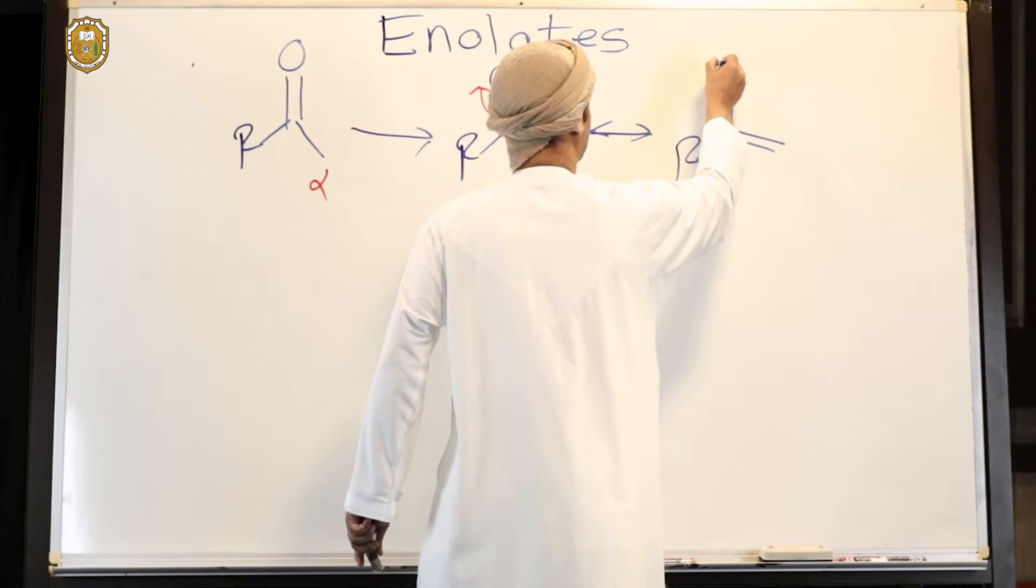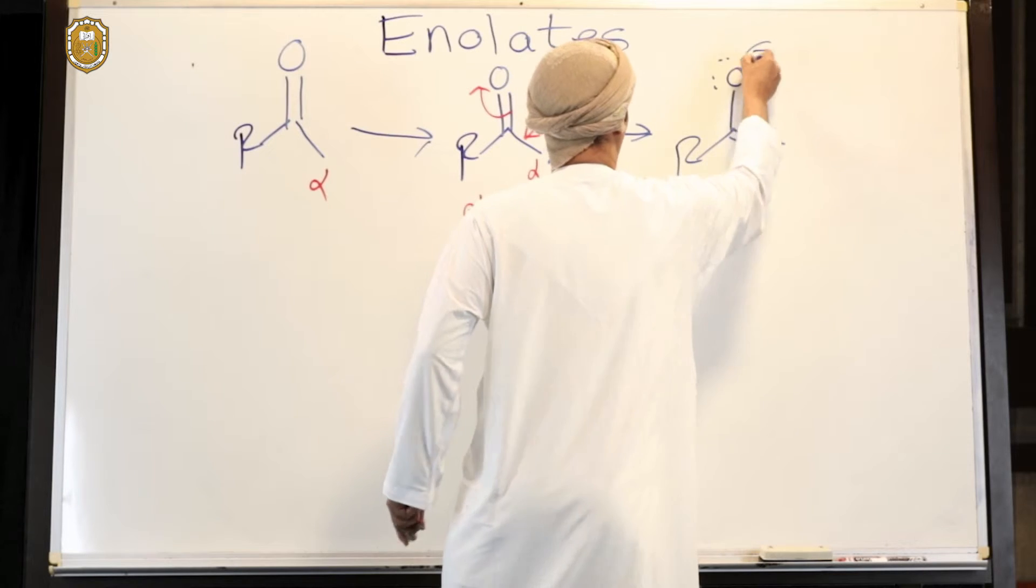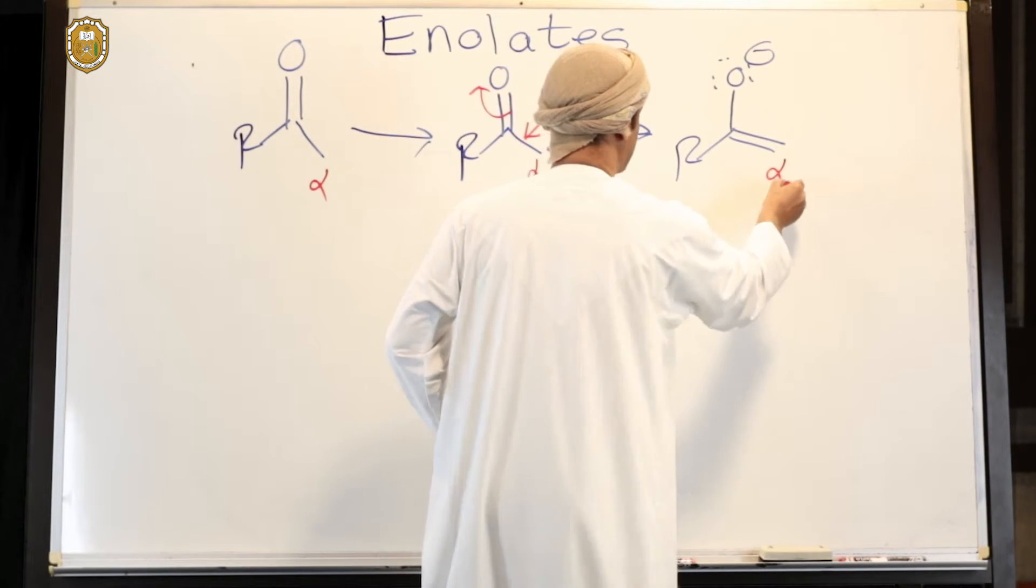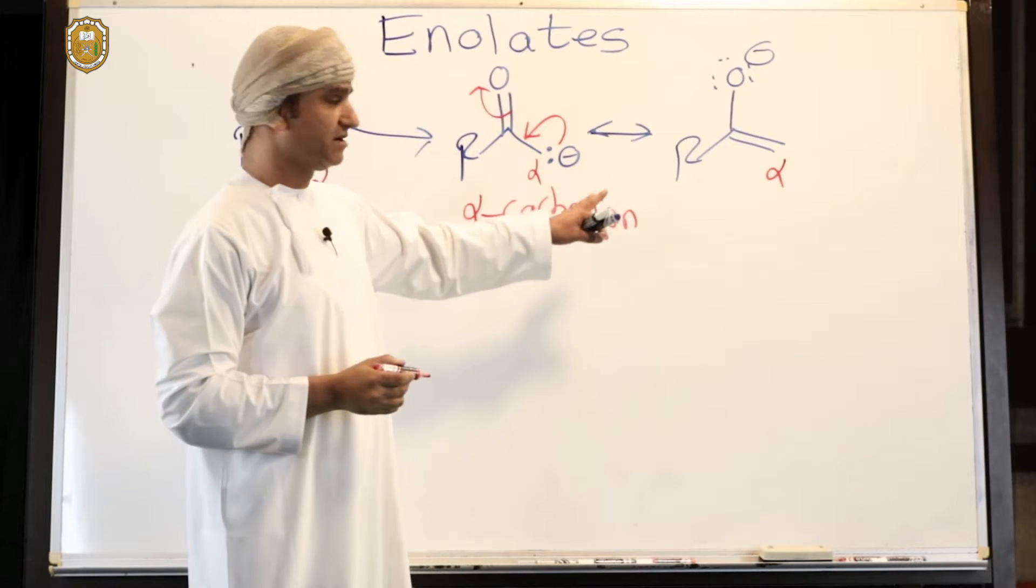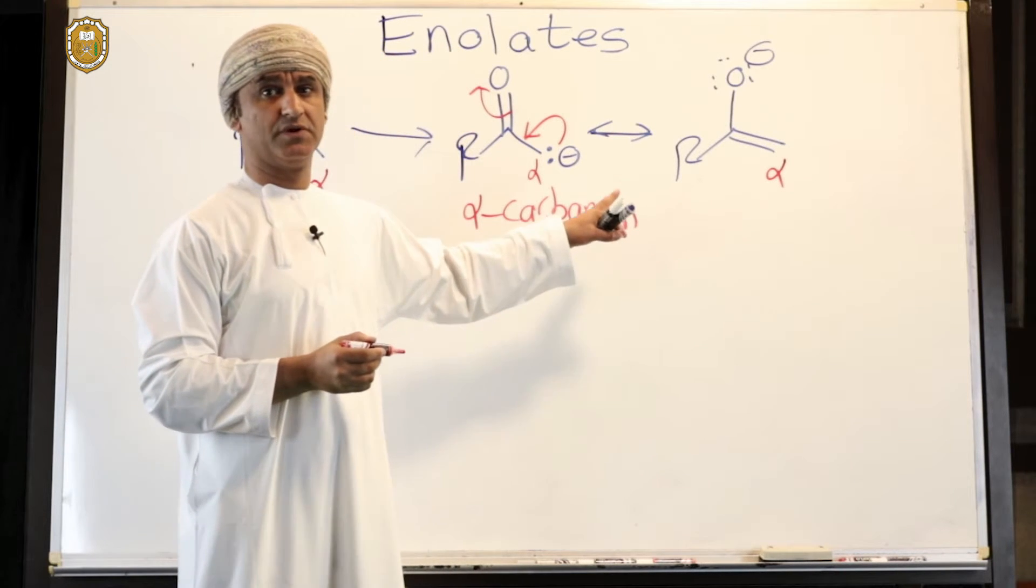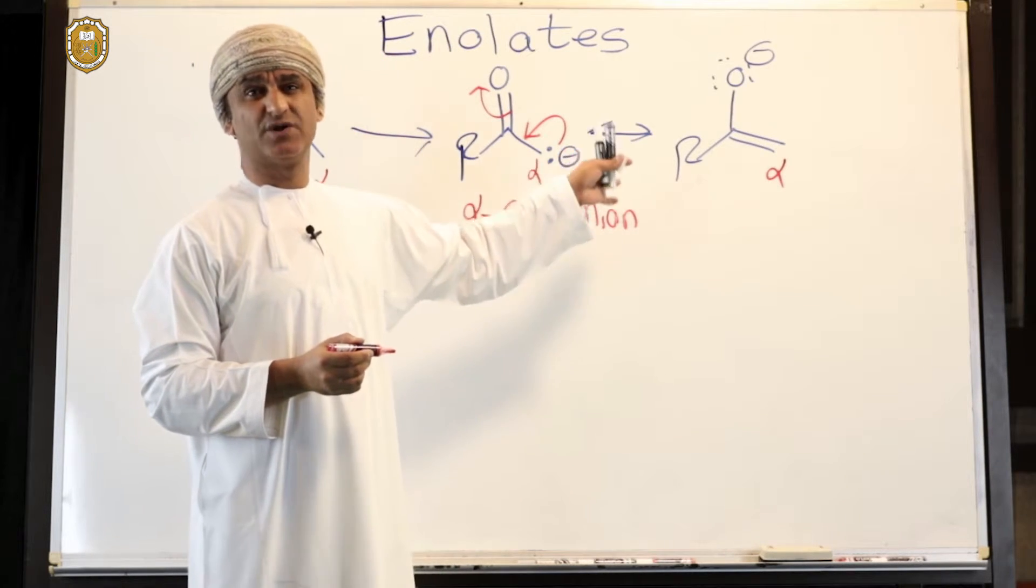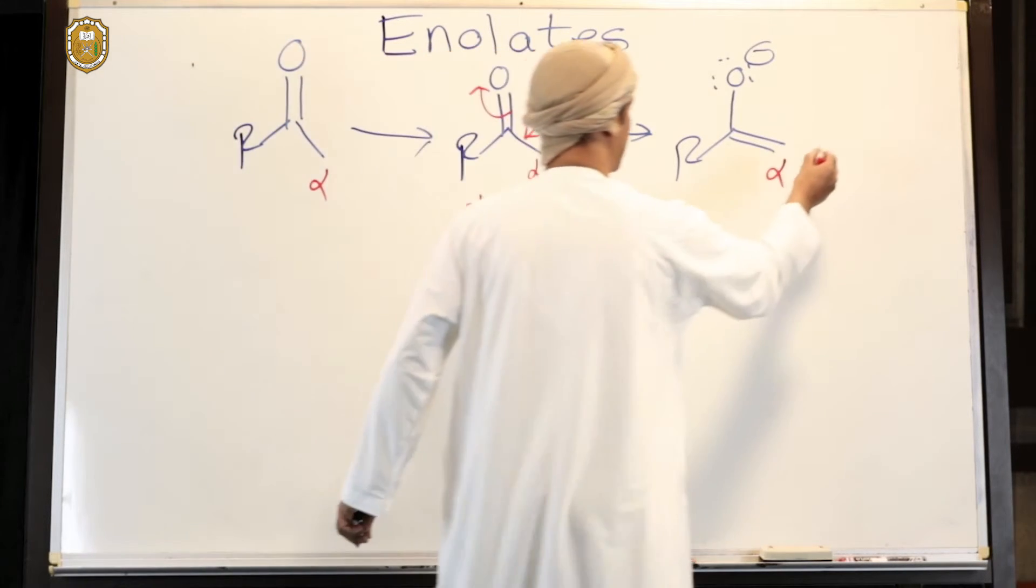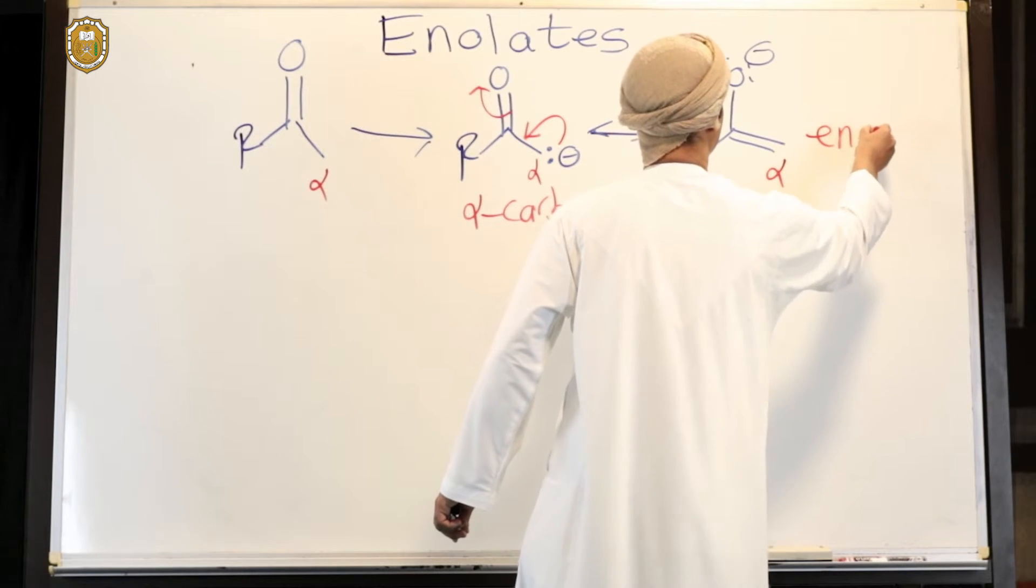There is a carbon-oxygen single bond. This intermediate has a carbon-carbon double bond and is in a way like an alkoxide also. This intermediate is called enolate. This is an enolate intermediate.